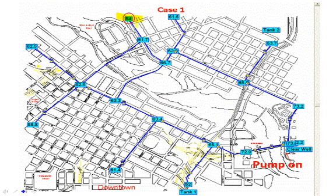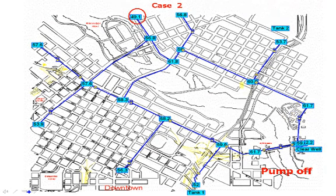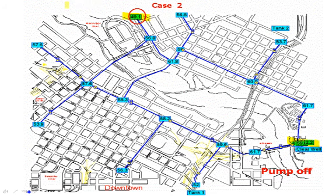With the pumps operating, the lowest pressure out here is 54 PSI. Near the pump station, it's around 73. With the pumps off, around the pump station the pressure drops down to the 50s, and here the pressure drops about 5 PSI. So the tanks are supplying the system quite adequately.